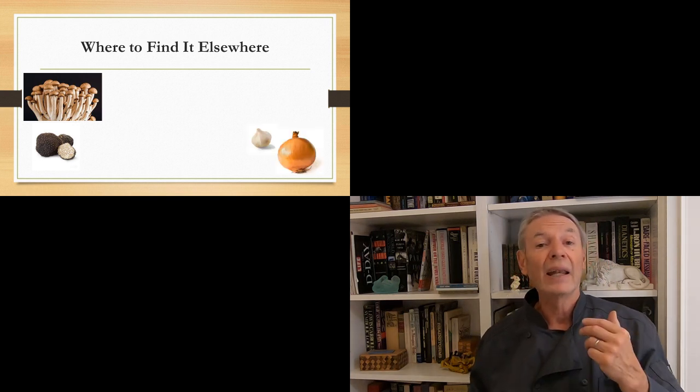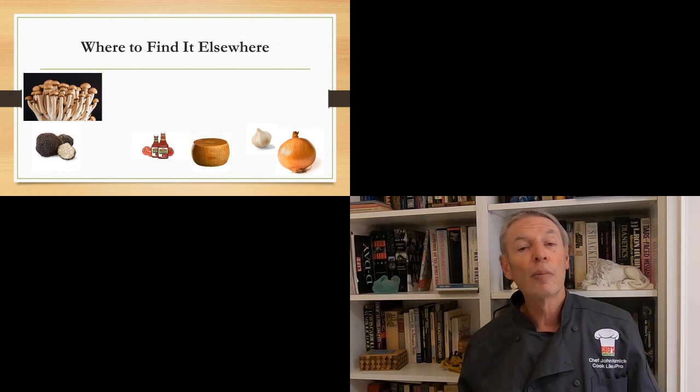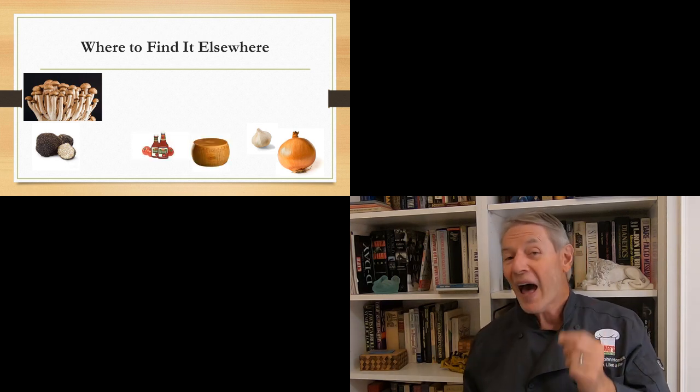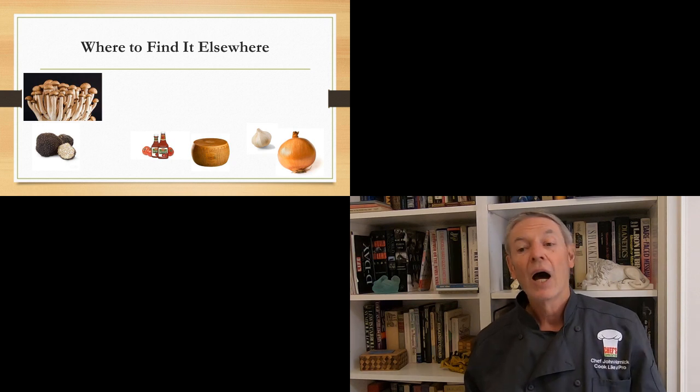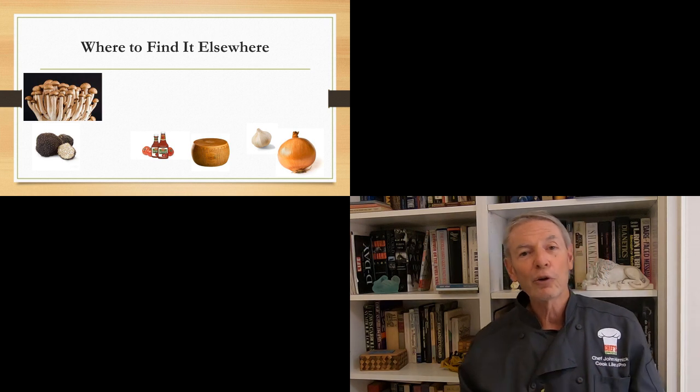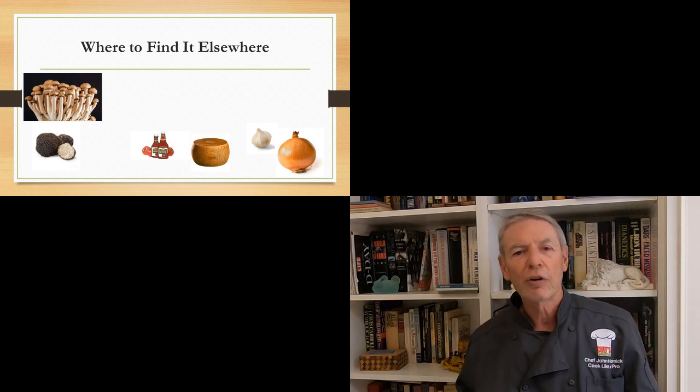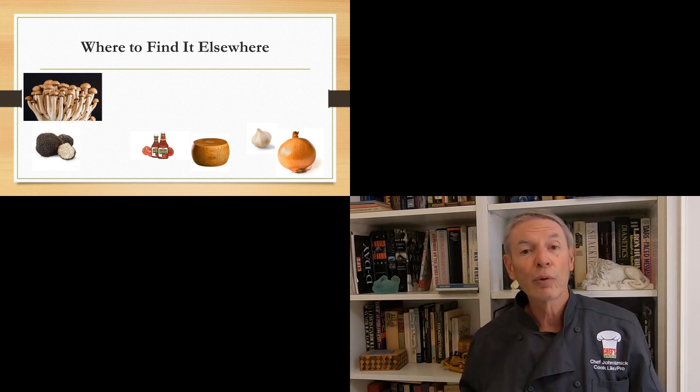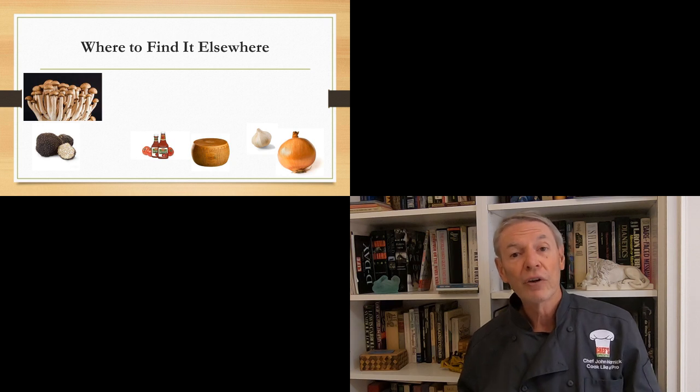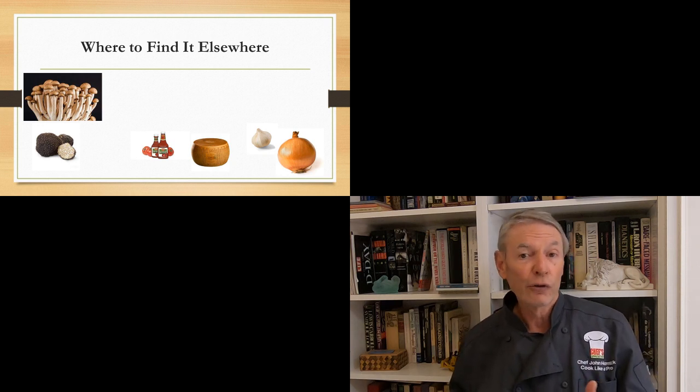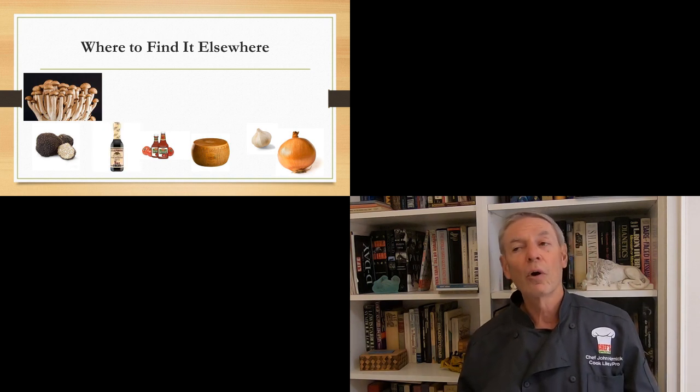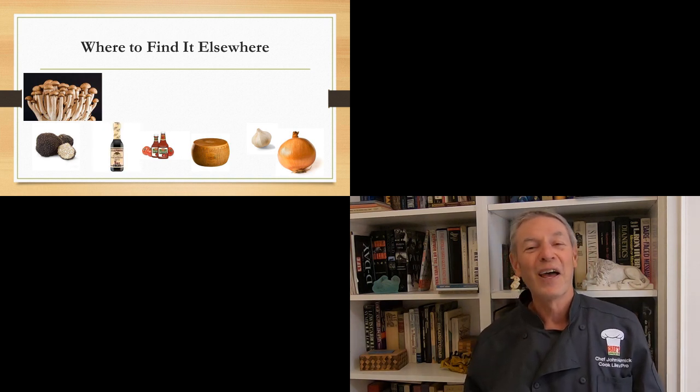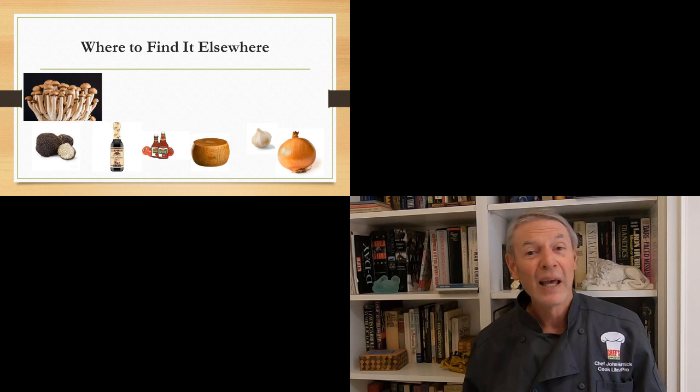Also, in onions and in garlic. You can also find umami in the pillars of Italian food, which are tomatoes and Parmesan cheese. And these two things together give you an umami rich meal. And it's no surprise, really, that these are pillars of Italian cooking. And also, of course, ketchup has umami. Also, Worcestershire sauce has a lot of umami.